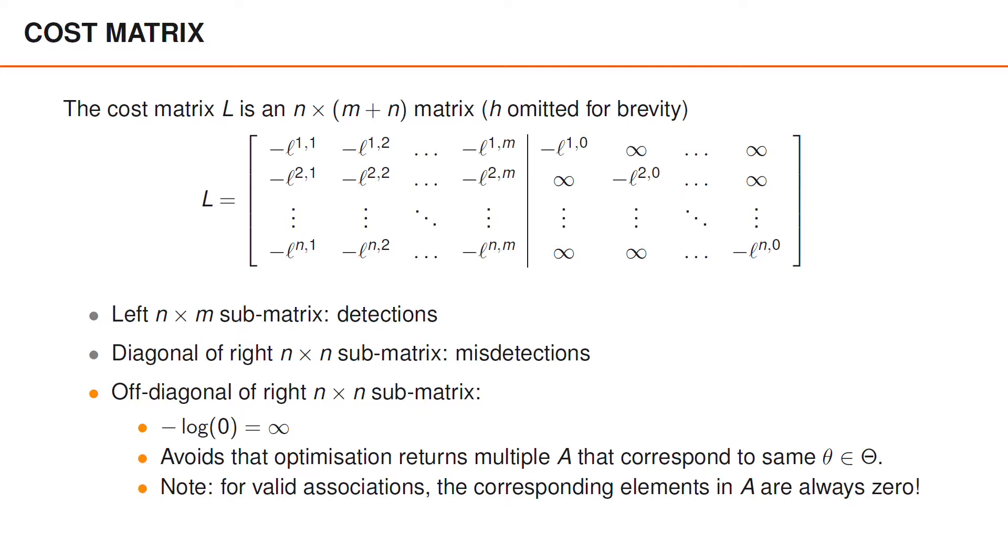You should note that if we have a valid association, then the corresponding elements in the assignment matrix A are always zero.